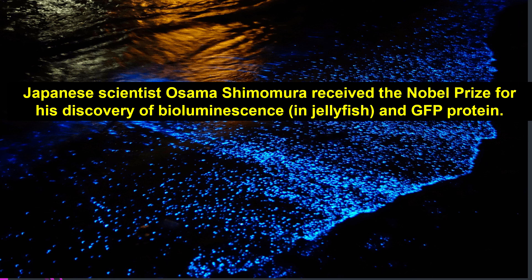Japanese scientist Osamu Shimomura received the Nobel Prize for his discovery of bioluminescence in jellyfish and GFP protein — green fluorescent protein.